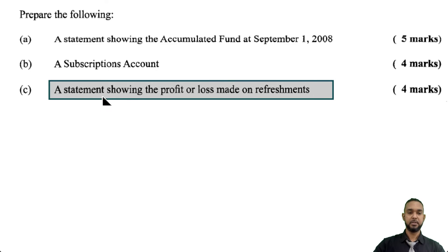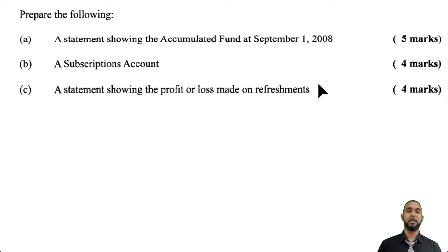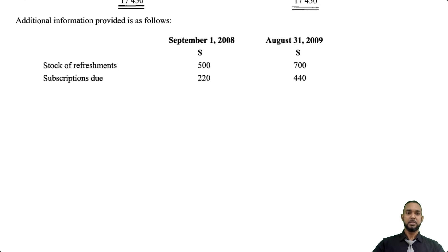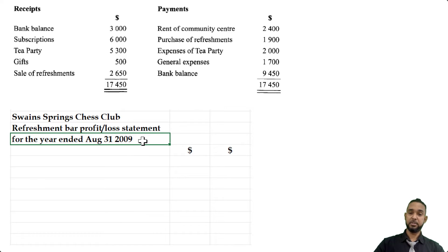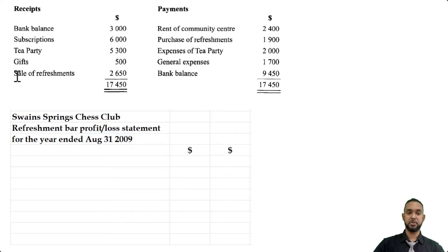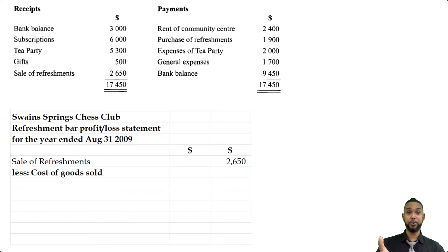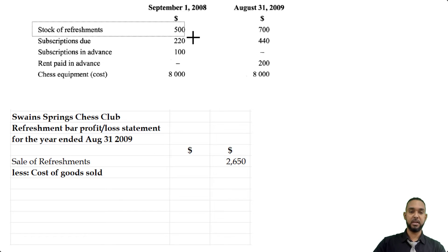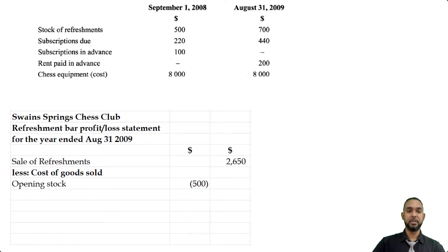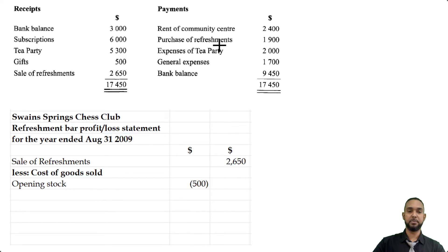Part C asks us to do a statement showing the profit or loss made on refreshments — basically a trading account or mini income statement. Head it up: Swain Springs Chess Club refreshment bar profit or loss statement for the year ended August 31st 2009. The sales figure comes from the receipts and payments account: sale of refreshments $2,650. Then we put less cost of goods sold. We start with opening stock of refreshments — $500 — and purchases of refreshments from the credit side of the receipts and payments account: $1,900.